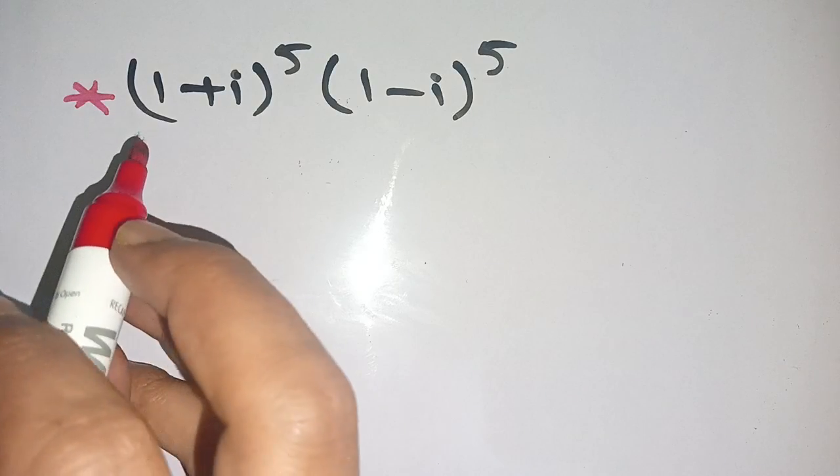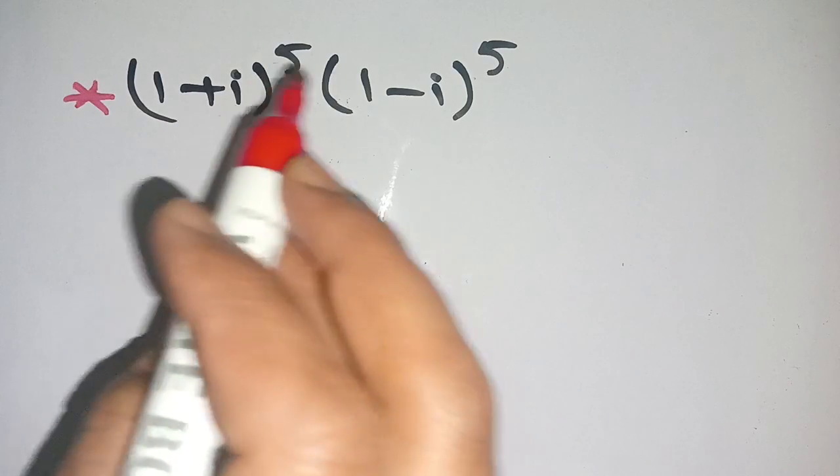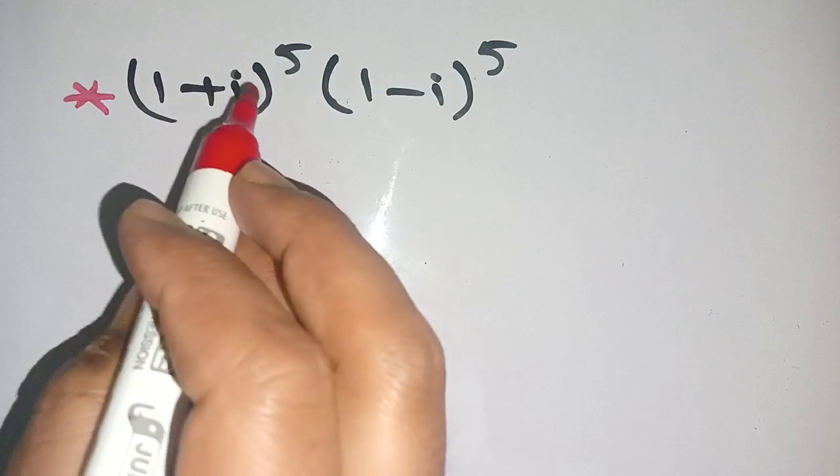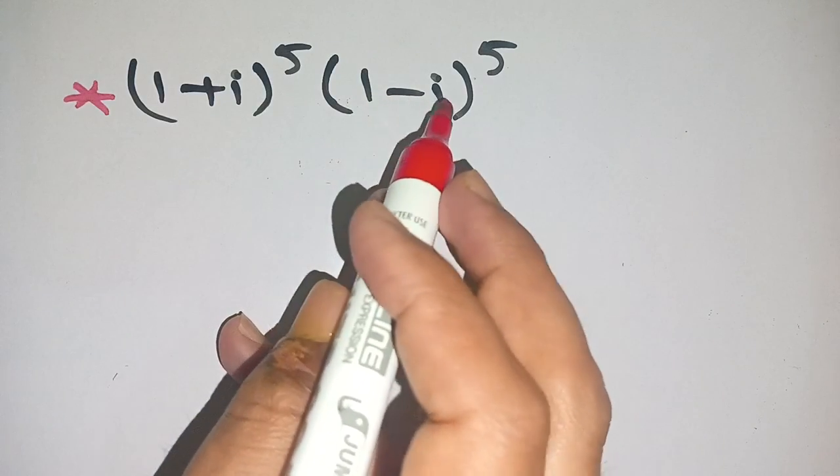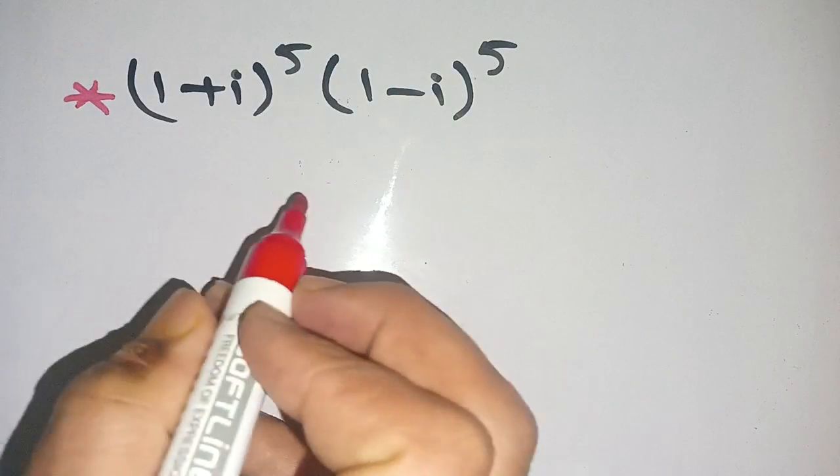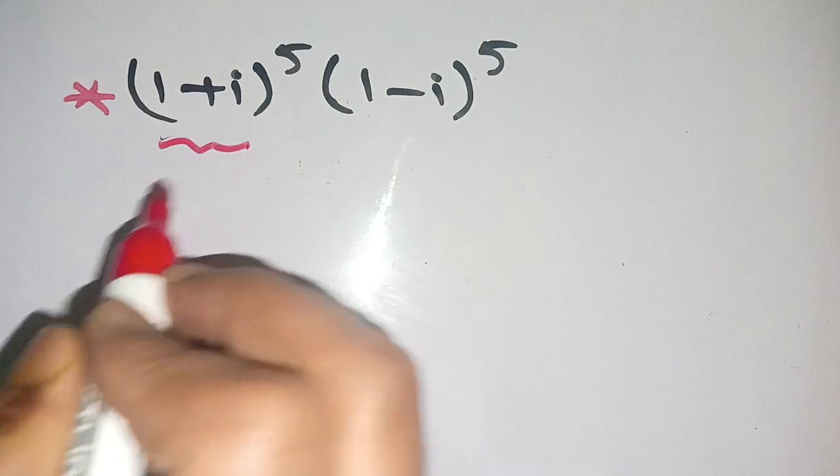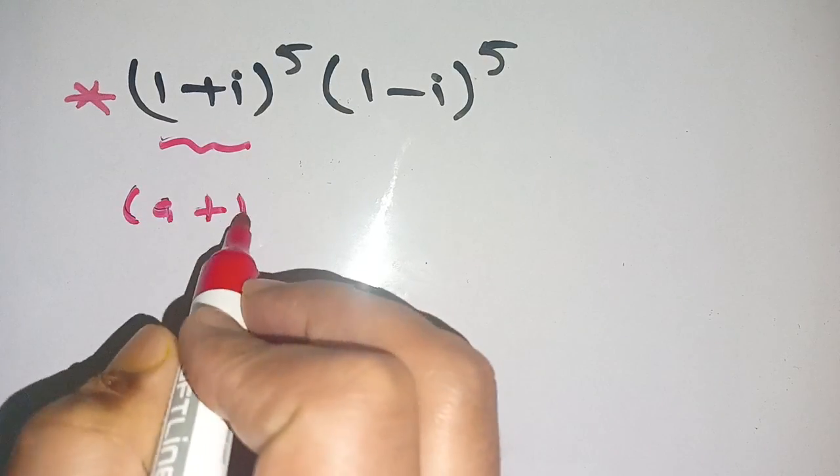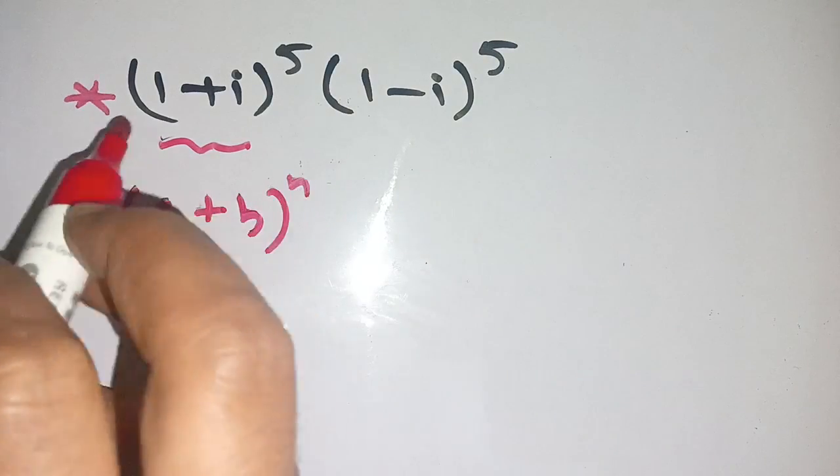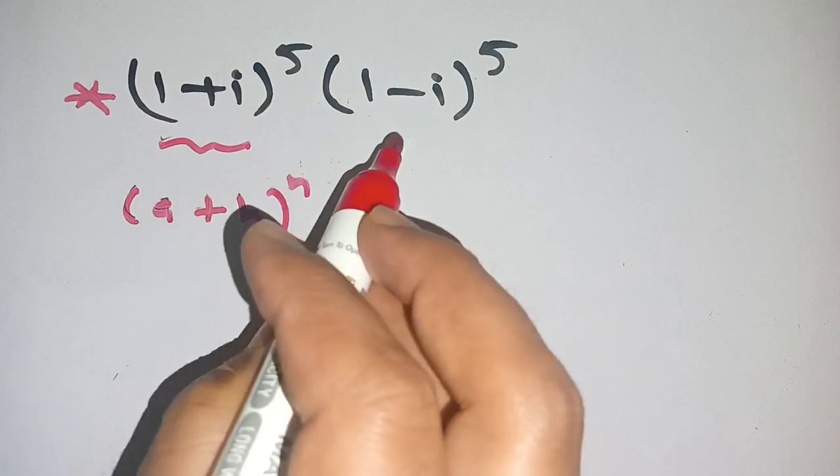In today's video we are going to solve this complex power problem: (1+i)^5 times (1-i)^5. First method is that we apply (a+b)^n formula from both these terms, but it is a lengthy process.